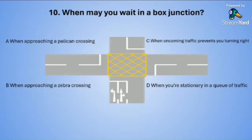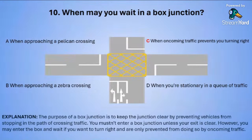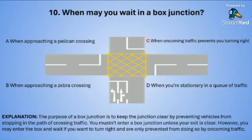The correct answer is C — when oncoming traffic prevents you turning right. The purpose of a box junction is to keep the junction clear by preventing vehicles from stopping in the path of crossing traffic. You mustn't enter a box junction unless your exit is clear. However, you may enter the box and wait if you want to turn right and are only prevented from doing so by oncoming traffic.